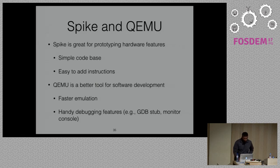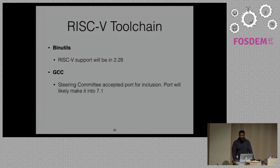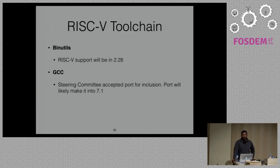There's been a lot of progress on the RISC-V toolchain. RISC-V support will be in binutils 2.28, and the GCC steering committee has accepted the RISC-V port for inclusion — it will likely make it into GCC 7.1. This is due to hard work by Andrew Waterman and Palmer Daubelt. Now that we have the upstream toolchain, I think Linux distros and more software enablement will just fall out, going much faster.